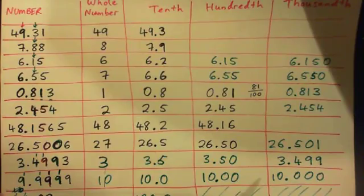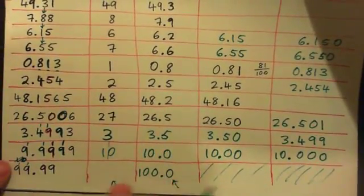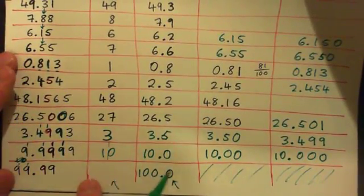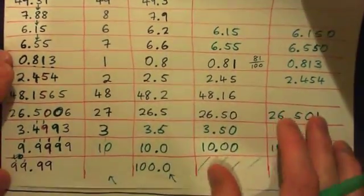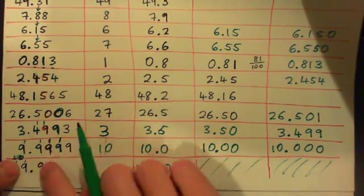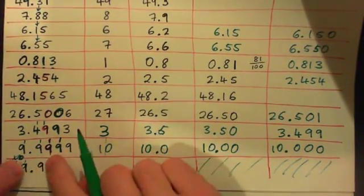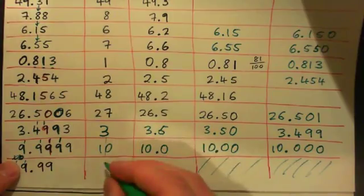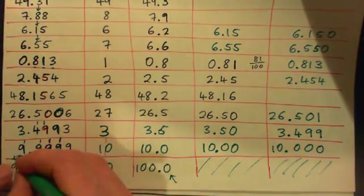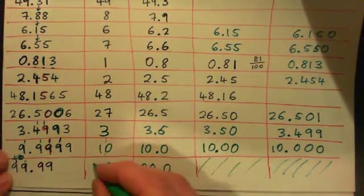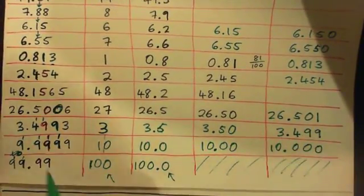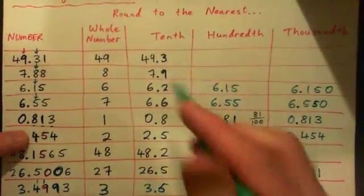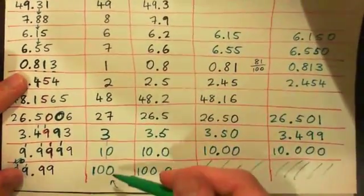Now rounding 99.99 to the nearest whole number — what do you think that'll give? This is the whole number place. The next one is nine — round it up, becomes a ten. And that puts another one over here, that becomes ten. Obviously you should get a hundred. Because 99.99 rounded to the nearest whole number should be a hundred dollars, right?